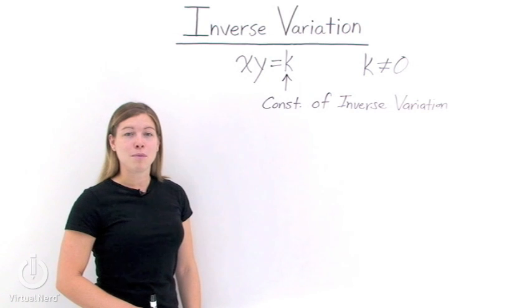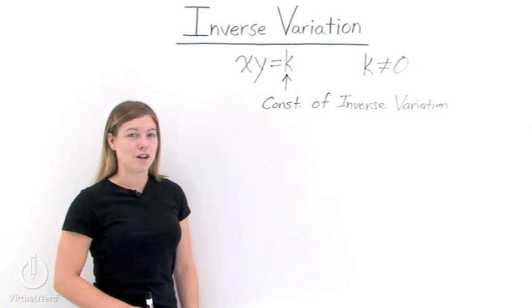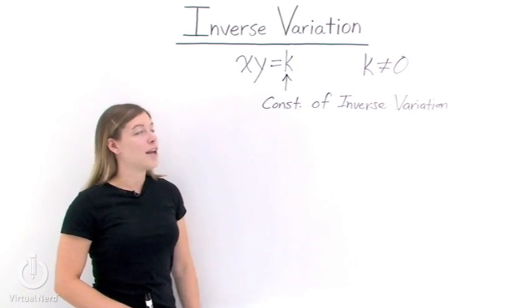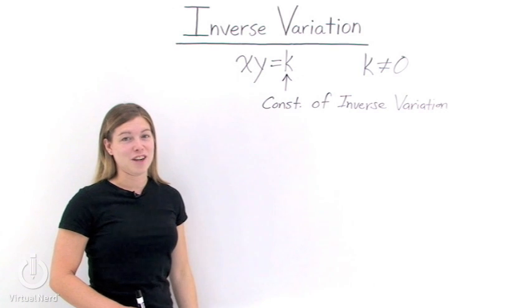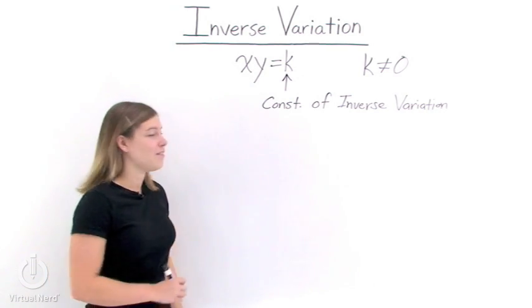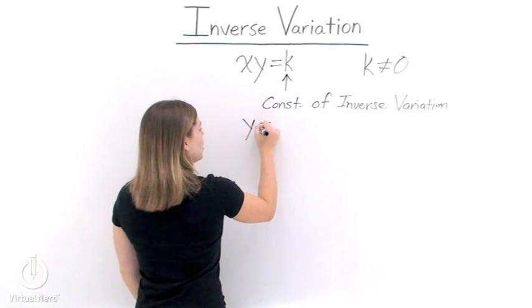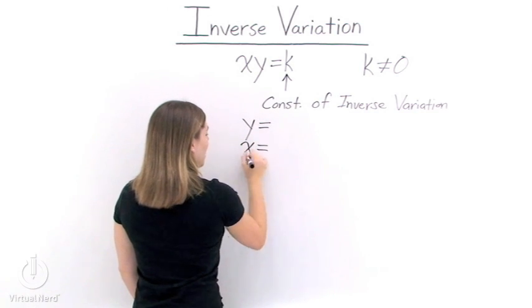Well, notice that our problem says inversely proportional. That phrase is the same thing as saying inverse variation. So we need to use our formula. Let's figure out what each one of our variables is and our constant.